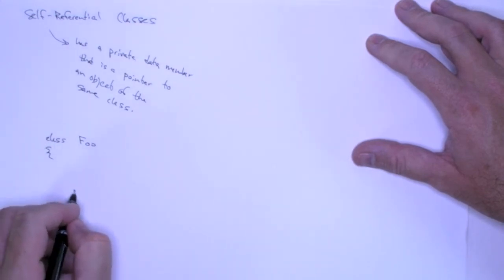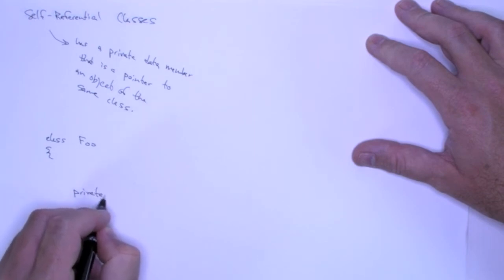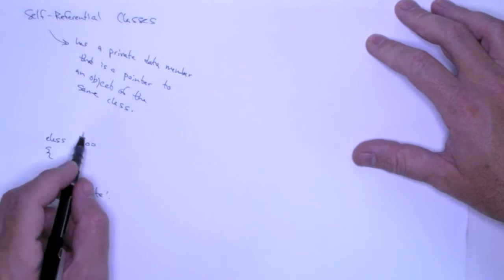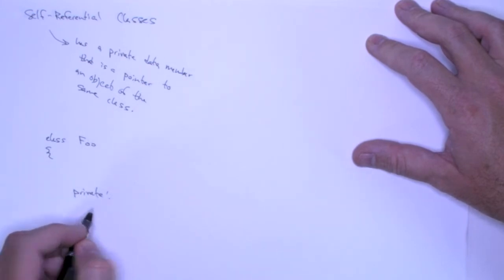And I need a private data member that is a pointer to an object of the same class. Well, if my class is foo, how do I declare a pointer to foo? Just like that.